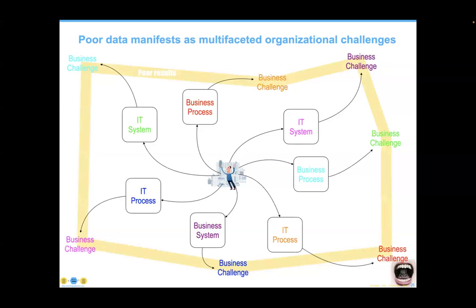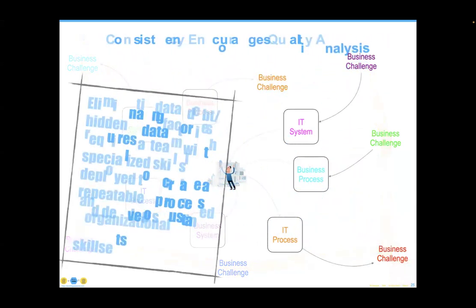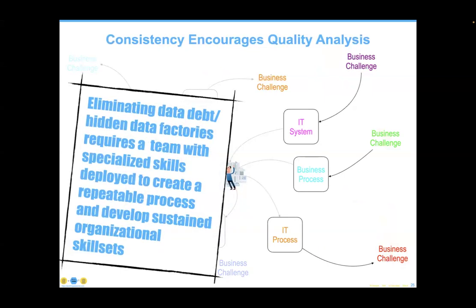Poor data manifests itself as multifaceted organizational challenges. One data challenge at the center of your processing is always filtered through one or more IT systems or business challenges. Until you connect the dots, you won't know that fixing one data challenge can actually help organizations in a major way. Root cause analysis of these problems is a major part of data governance initiatives. We get much better results from a dedicated team that deploys a repeatable process and develops sustained organizational skills.